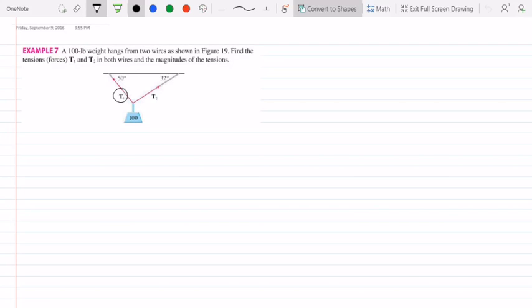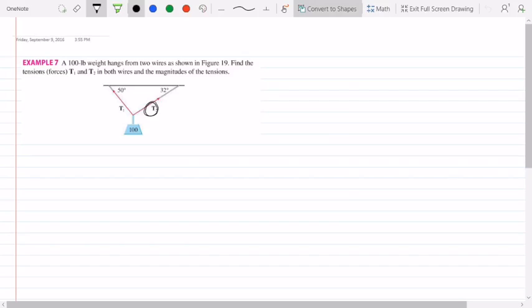So we have this vector T1 here, we have this vector T2 here, and we want to model what their tensions are. There are enough variables in this problem or constraints in the problem for us to solve for the magnitude of T1 and the magnitude of T2.